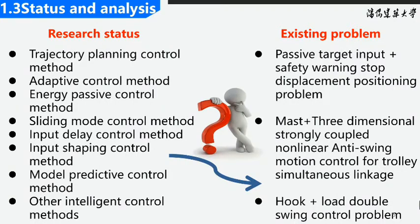Scholars have carried out extensive research on control methods in recent years, improving gantry crane's production efficiency and safety. The research results mainly include trajectory planning control methods, adaptive control methods, energy-based passive control methods, and so on. But there are still some difficult problems to be further studied, such as passive target input, safety early warning, stop displacement, and positioning.